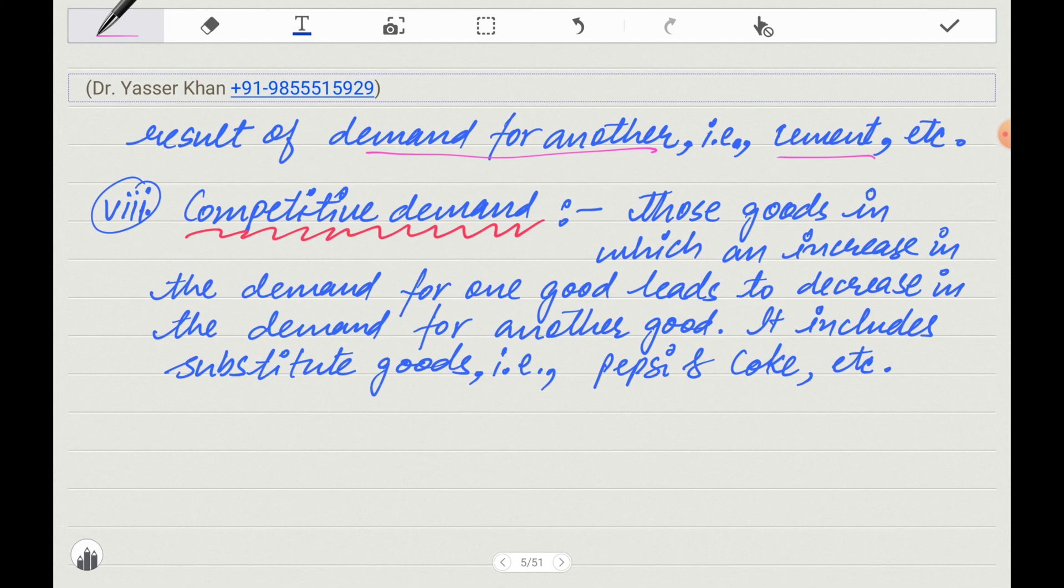Next, competitive demand is basically substitute goods in which an increase in the demand for one good leads to decrease in the demand for another good. For example, Pepsi and Coke. If Pepsi is promoted, then Pepsi's demand will increase and those who buy Coke will shift to Pepsi. When one's demand increases, the other's demand goes down.